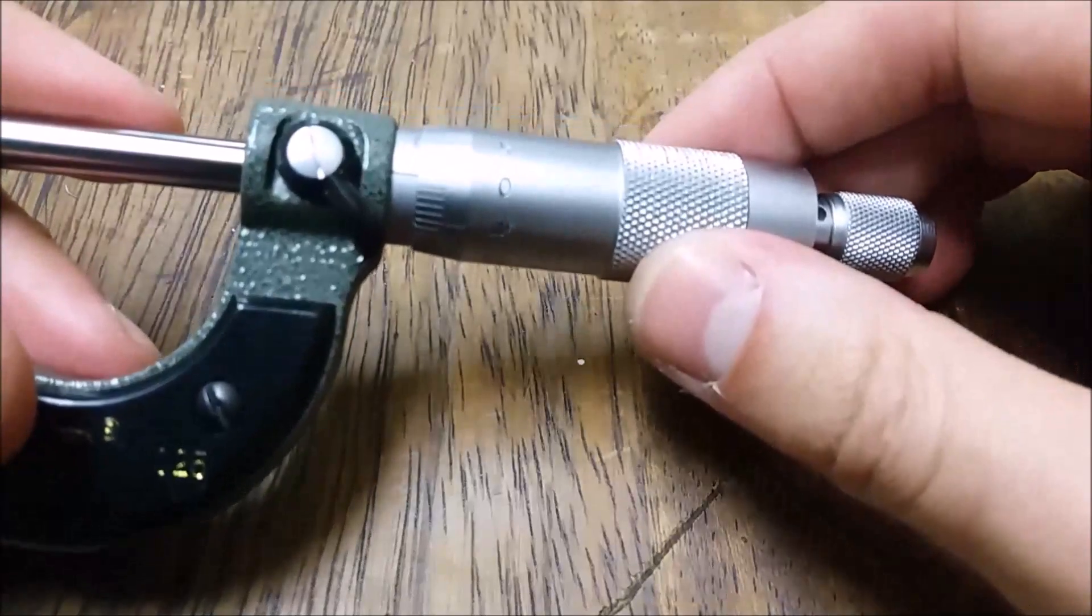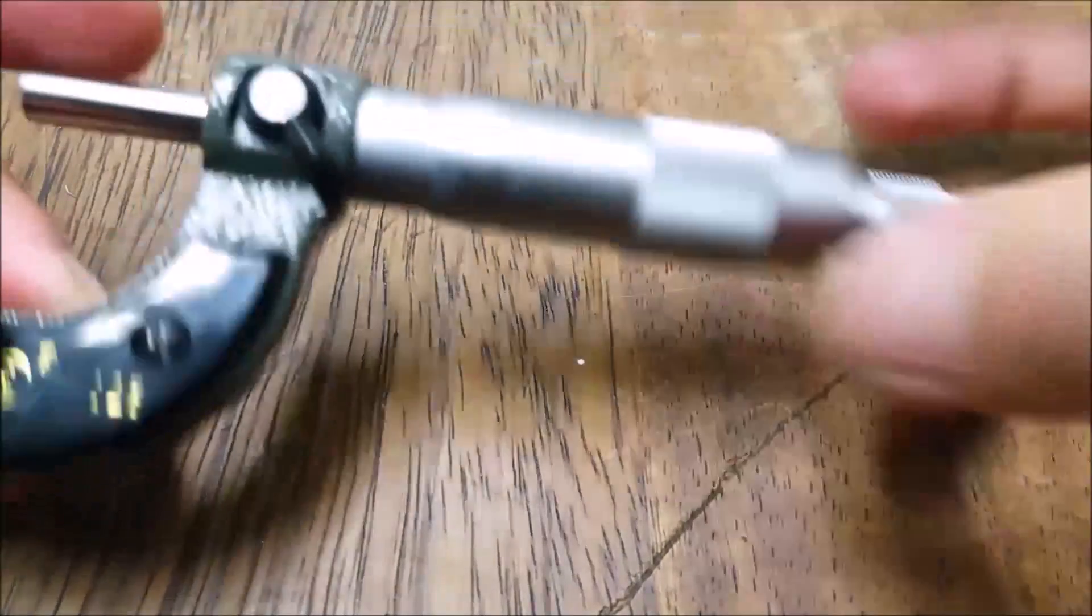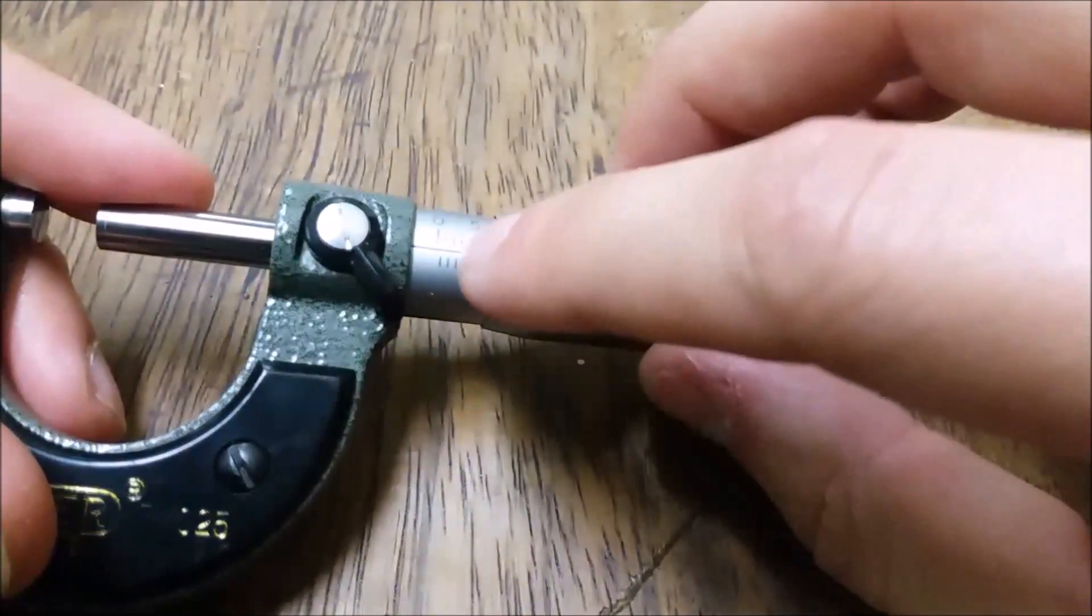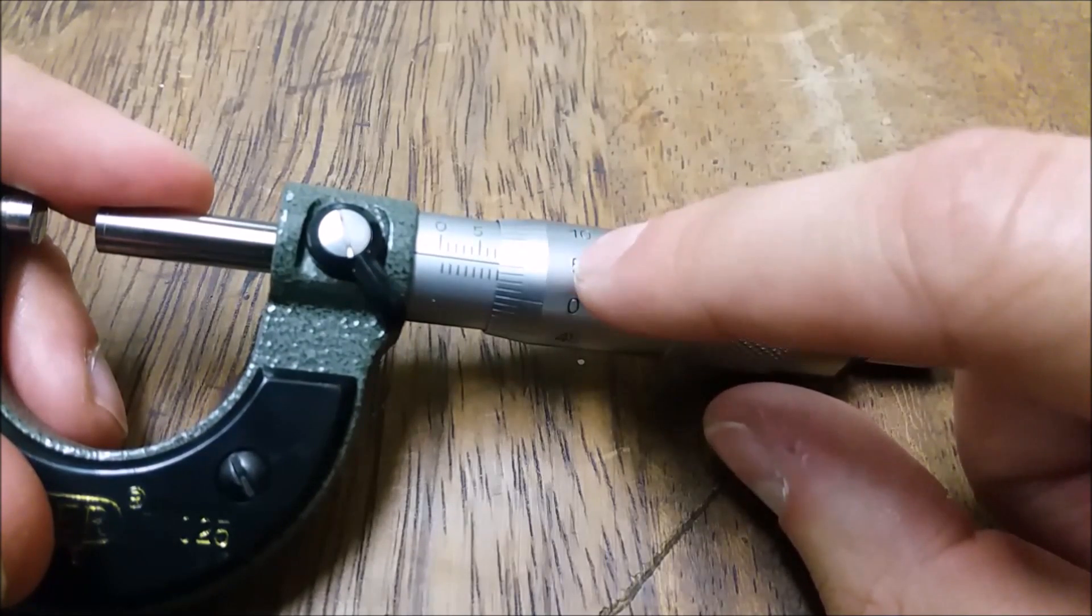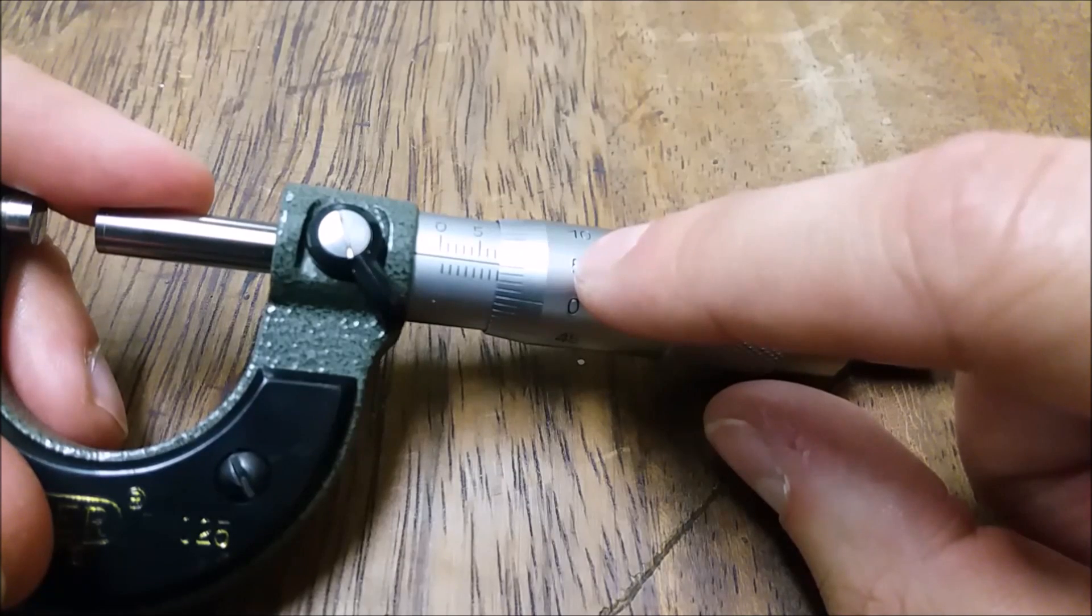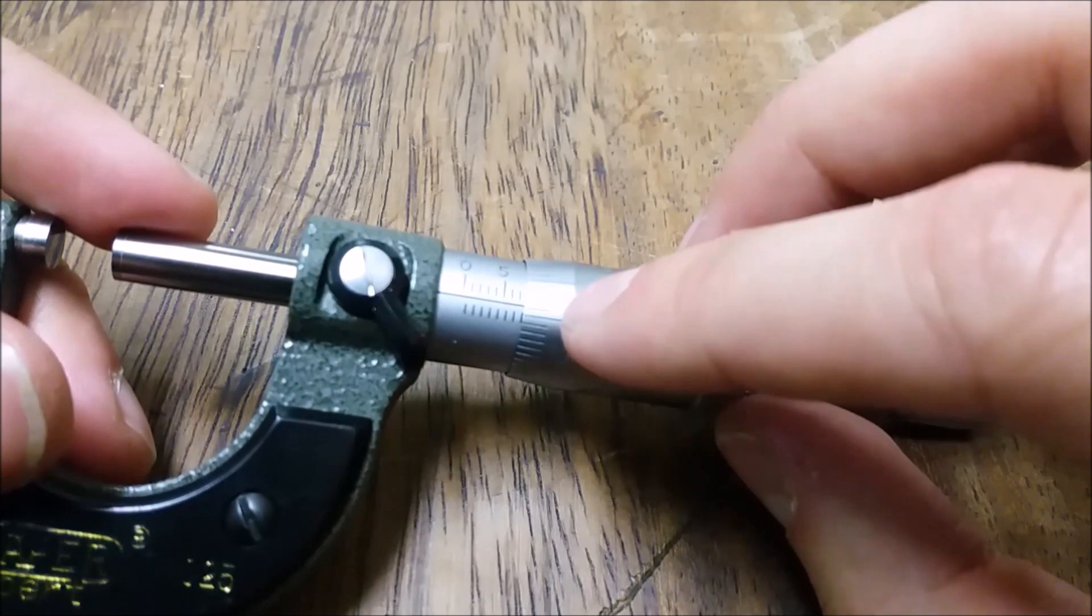But I won't go into too much detail now about how the micrometer works, but basically, if we open it up, these lines on the inside are millimetres. The lines underneath are half millimetres. These lines here... I've forgotten what they were. One hundredths of a millimetre.